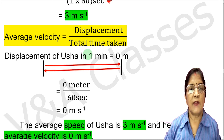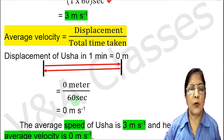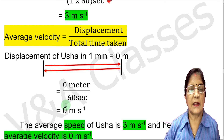We put displacement equal to zero in the formula, and time equal to 60 seconds, since 1 minute equals 60 seconds. When we divide zero by any number, the answer is zero. So average velocity equals 0 meters per second.